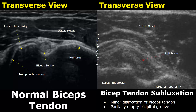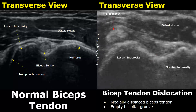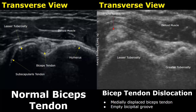Here is a case of biceps tendon dislocation. There is complete displacement of the biceps tendon — it is medially displaced and the bicipital groove is empty.